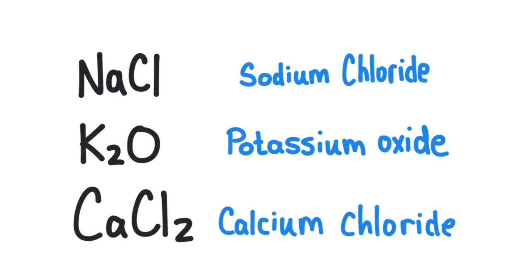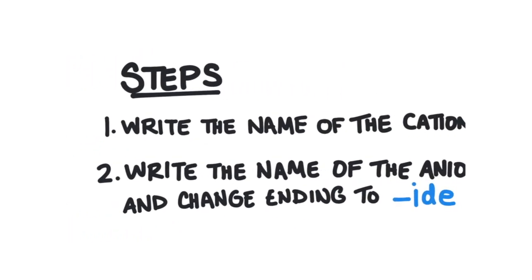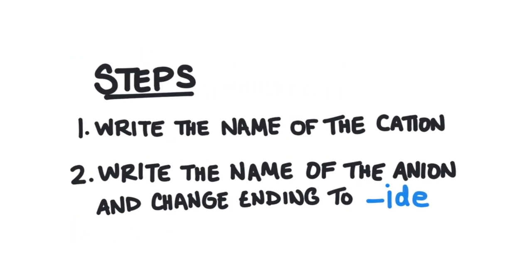Let's see how we go about coming up with these names. There are some simple steps we can follow. First, we write the name of the cation — that's the element with the positive charge, which is generally going to be the metal, and it comes first in the formula. Then we write the name of the anion — that's the one with the negative charge, which comes second in the formula — and we change its ending to -ide.